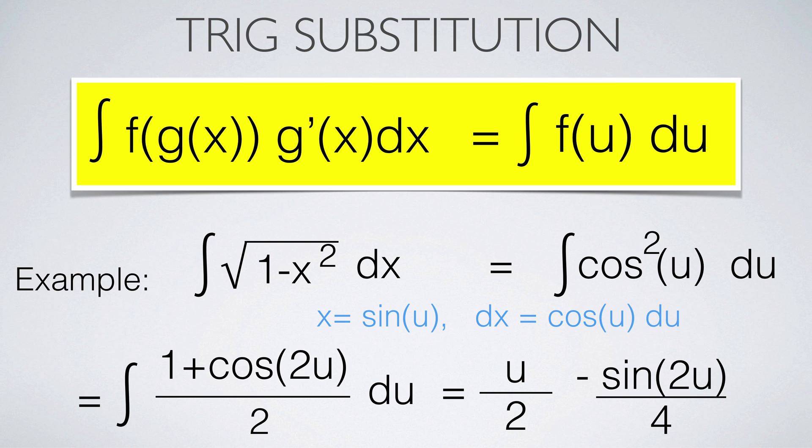The method of trig substitution is a special case of substitution where the function u is an inverse trig function. It is useful if a trig function allows to get rid of a square root.